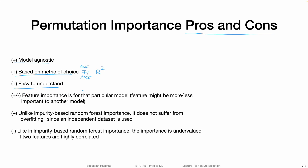It's also easy to understand — we're just shuffling a column and looking at the performance before and after, so we can explain it to collaborators in a few minutes. Feature importance is particular to a given model, which is both a pro and a con. It helps us understand a particular model better, but if that model is not very accurate, the estimated feature importance may not be a good reflection of the true feature importance in general.